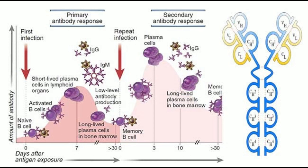Characteristic #12 - Antibody Level: In the primary immune response, the antibody level declines to the point where it may be undetectable. In the secondary immune response, the antibody level tends to remain high for longer.